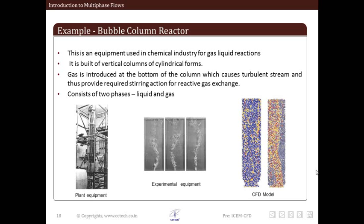It is built of vertical columns of cylindrical form — vertical cylinders — and the gas is introduced in the form of bubbles from the bottom. This causes turbulence due to the motion of the gas stream, providing a kind of a stirring action or rigorous turbulent mixing action for reactive gas exchange. Usually it consists of two phases: liquid and a very high turbulent bubble stream containing gas. So it is a multiphase system consisting of liquid and gas.